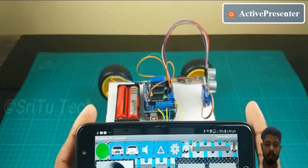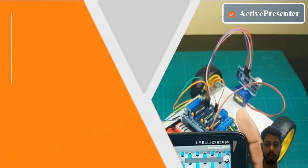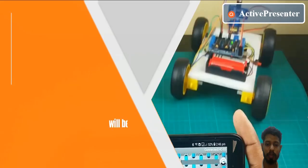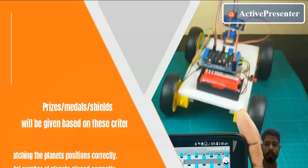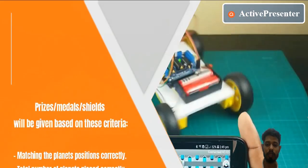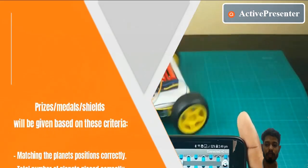Prizes and medals and shields will be given based on these criteria: matching the planets' positions correctly, total number of planets placed correctly, and which group finishes first within the given timing.